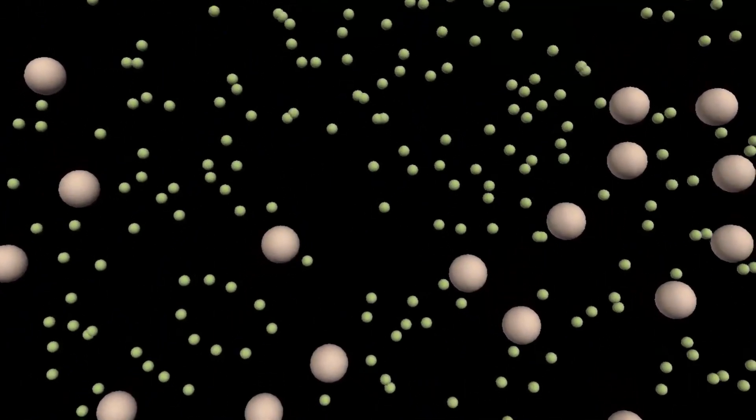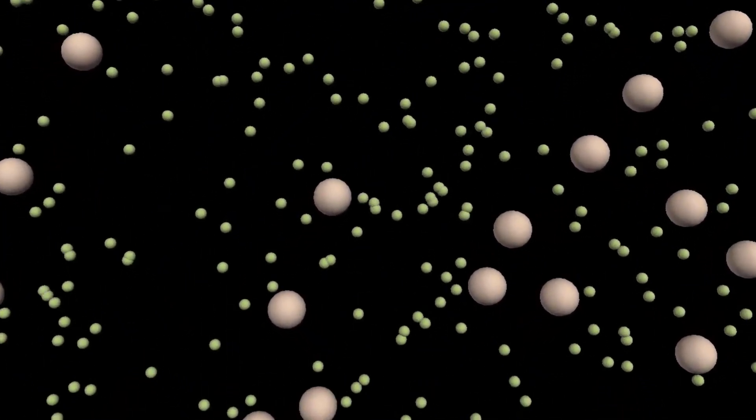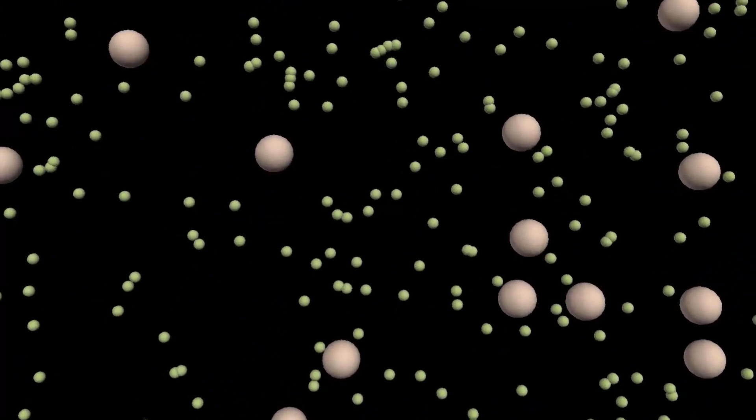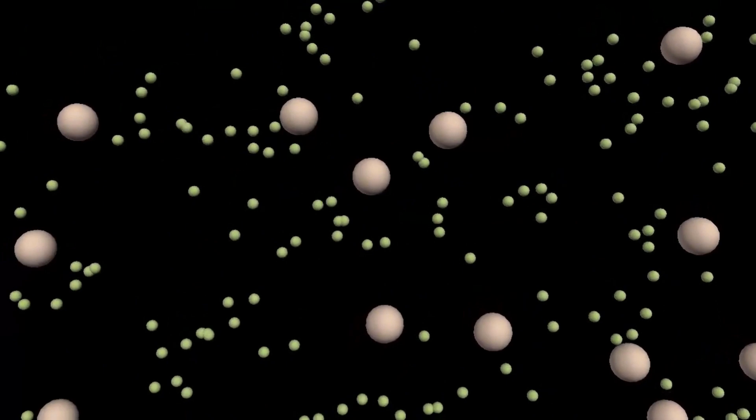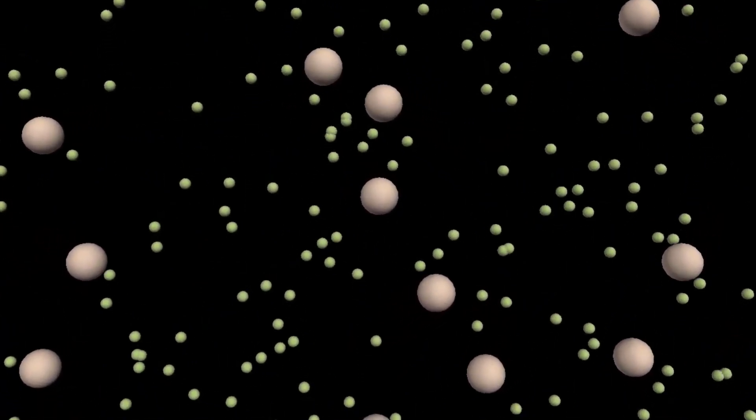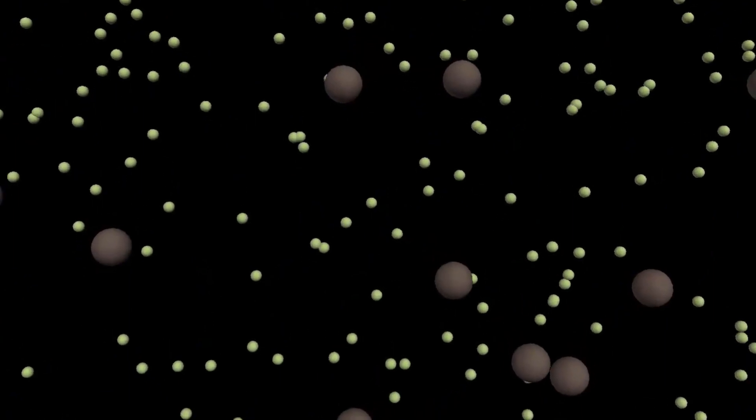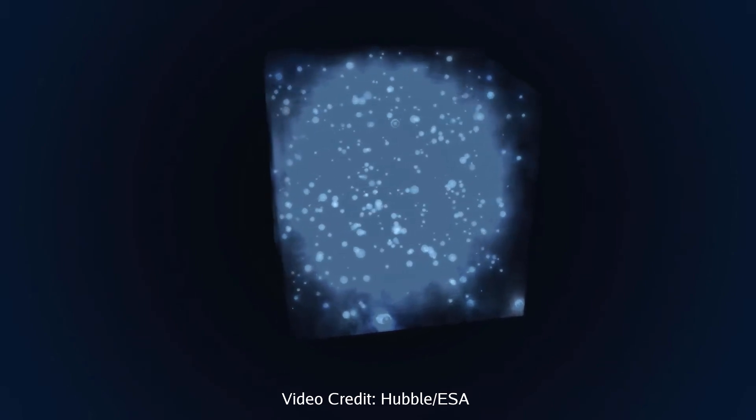300,000 years after the Big Bang, it reached a temperature of around 3000 Kelvin. At this temperature, it was cold enough for atoms to capture electrons, forming hydrogen and helium gas. The universe became transparent to light. For the first time, light could travel in straight lines for millions of years without being scattered.